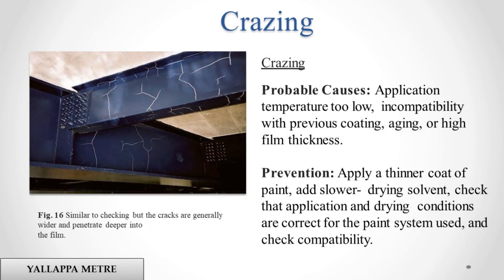Crazing. Probable causes: application temperature too low, incompatibility with previous coating, aging, or high film thickness. Prevention: apply a thinner coat of paint, add slower drying solvent, check that application and drying conditions are correct for the paint system used, and check compatibility.